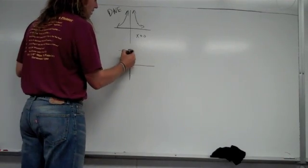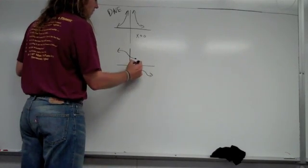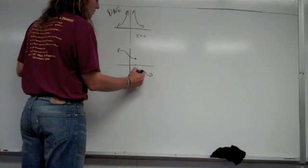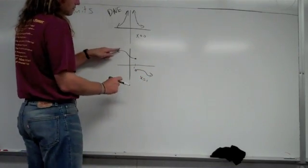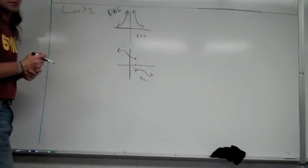Another case would be something like this, if you have a graph that splits off, so let's say here, this would be like at x equals one. So at x equals one, this does not exist, because from the left-hand side, from the right-hand side, it goes to two different y-values.